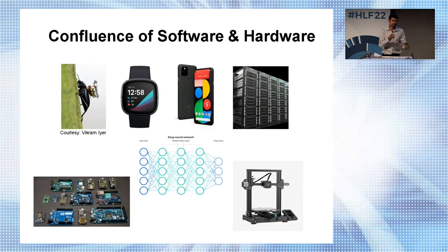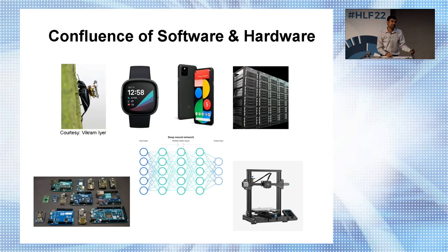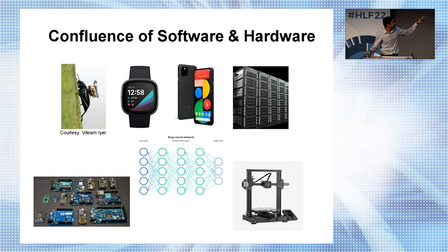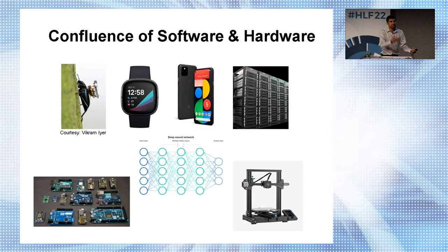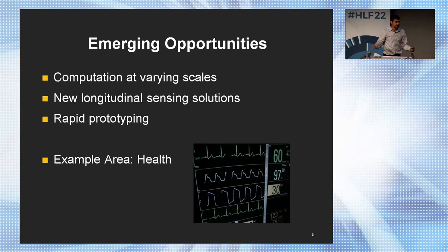Computing isn't limited to something you might wear. My colleague Vikram Iyer at the University of Washington is putting little steerable cameras on top of insects and beetles — computing is getting so small you can enable data collection in ways we never thought possible, surveilling the environment in entirely new ways. At the bottom are examples of prototyping — a 3D printer and embedded platforms. Just a decade ago it was really hard to build some of these embedded platforms. Now the confluence of fast prototyping, different computational scales, and machine learning has created an incredible opportunity in computing.